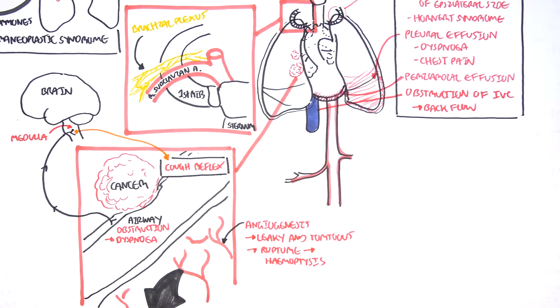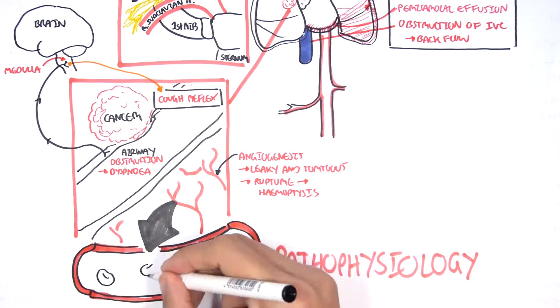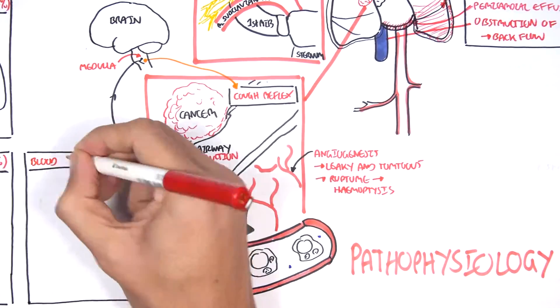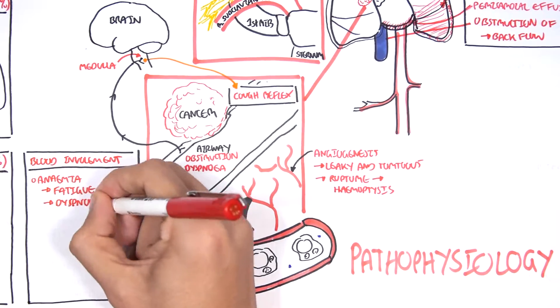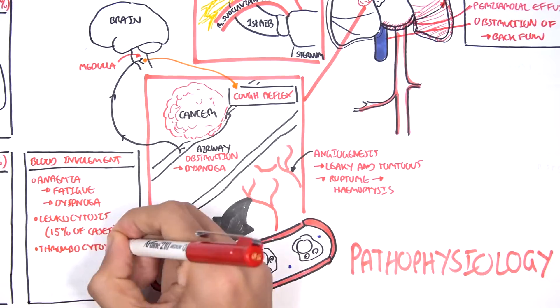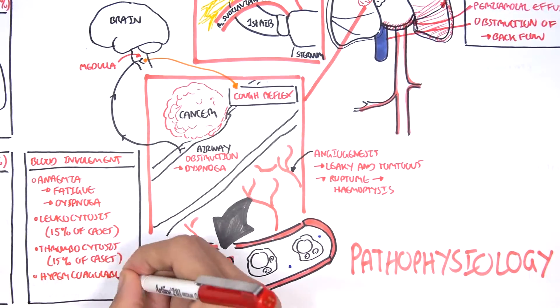Let us zoom into the blood vessels. The blood vessels contain your red blood cells, platelets, and white blood cells. In lung cancer, we see some blood involvement, mainly anemia, which leads to fatigue and dyspnea, leukocytosis in 15% of cases, thrombocytosis in 15% of cases, and hypercoagulable disorders.